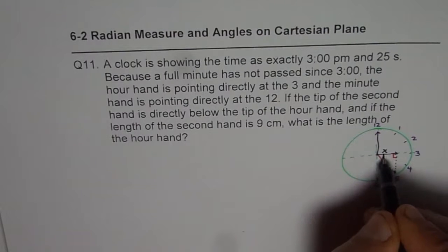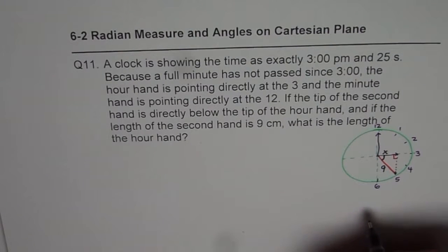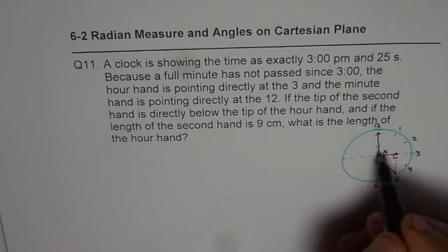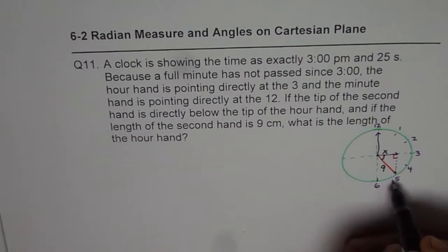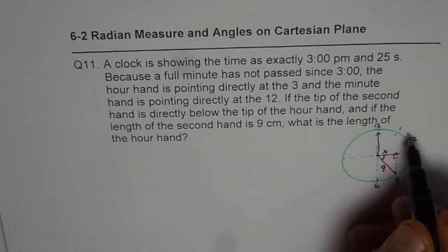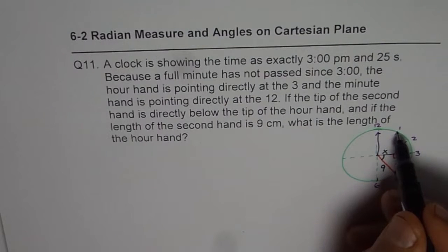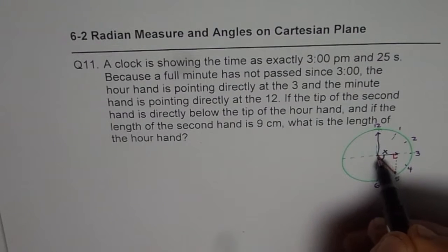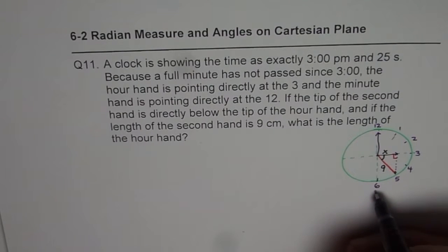Now, can you tell me what is this angle? Since 12 to 6 is a straight line, you can think it as one pi. This pi is divided into 6 equal parts. Each one is pi by 6, this is 2 pi by 6, 3 pi by 6, 4 pi by 6, 5 pi by 6, 6 pi by 6.